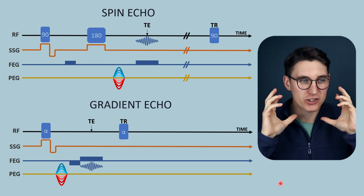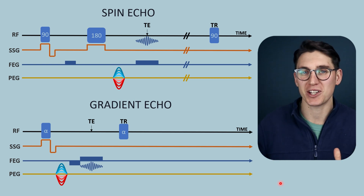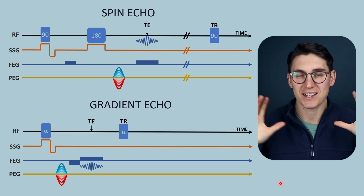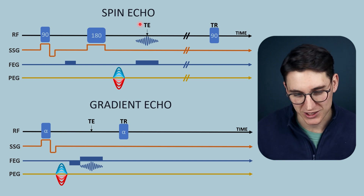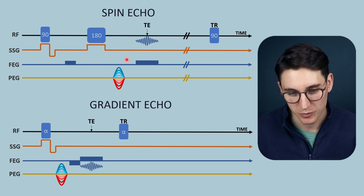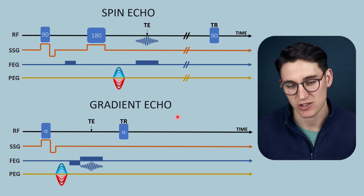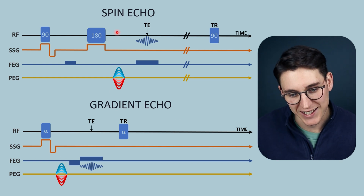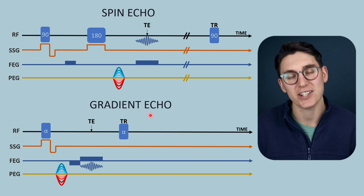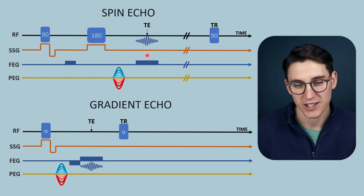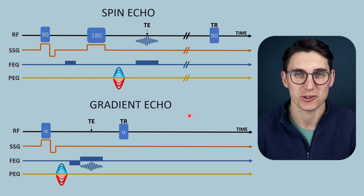For me, gradient echo sequences are much more complicated to grasp conceptually than spin echo sequences. I've drawn two separate pulse sequences here — a spin echo sequence you should be familiar with, and a gradient echo sequence. You'll notice that a gradient echo doesn't have a 180 degree pulse, and the TR and TE in gradient echoes are much shorter than in spin echo sequences. We're going to see why in the next three talks.